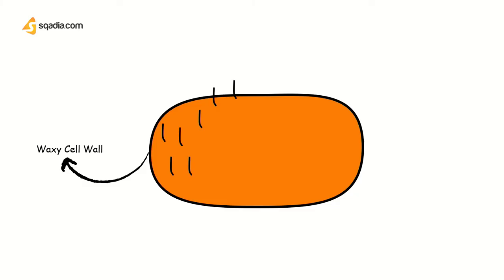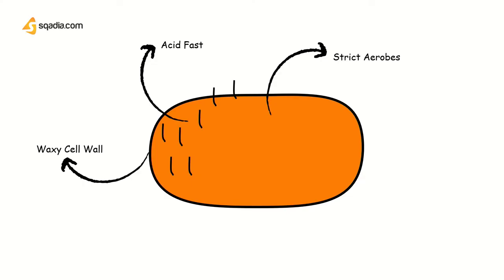It contains a waxy cell wall and is acid-fast because it contains mycolic acid. This acid-fast property is responsible for the name acid-fast bacillus, given to this bacteria when visualized under Ziehl-Neelsen or ZN staining, which we will discuss in the diagnosis part. It is a strict aerob, meaning it needs a high quantity of oxygen, so it lives in the upper portion of the lungs that are well ventilated. It produces a protein called cord factor.